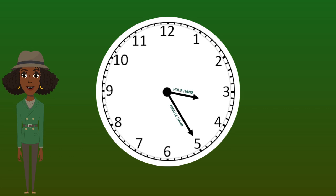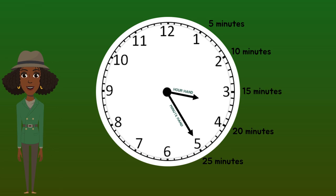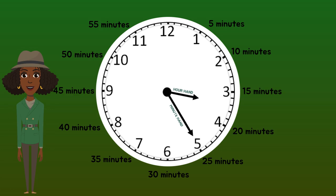It's important to remember that when you find the minute, each number represents an increment of five. The 1 represents 5 minutes. 2 represents 10 minutes. 3 represents 15 minutes. 4 represents 20 minutes. 5 represents 25 minutes. 6 represents 30 minutes. 7 represents 35 minutes. 8 represents 40 minutes. 9 represents 45 minutes. 10 represents 50 minutes, and 11 represents 55 minutes.